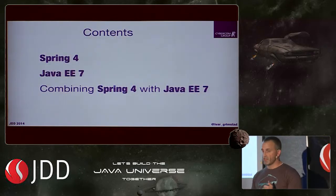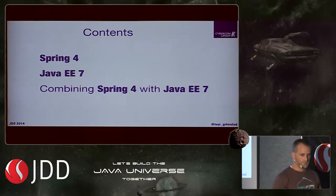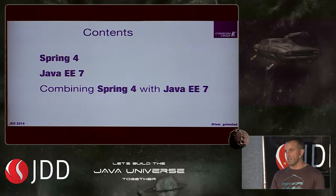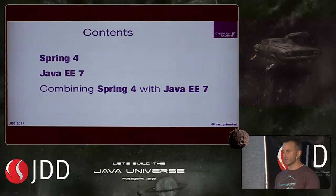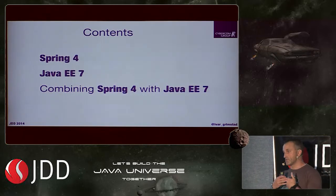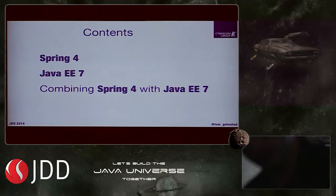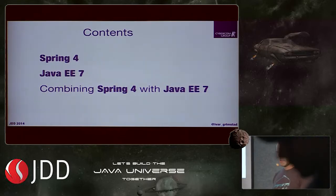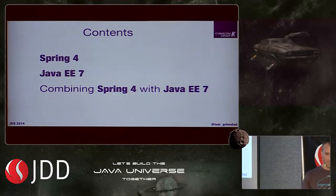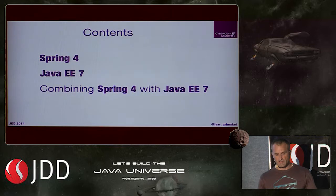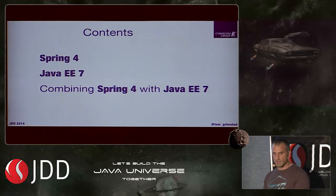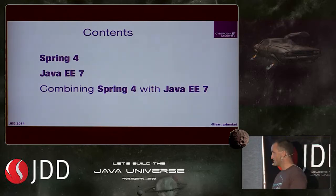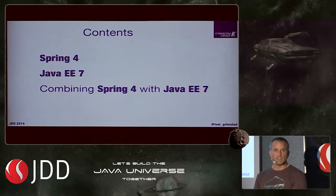What I'm going to talk about today is Spring 4 and Java EE 7, and combining the two frameworks. First I'll give a short intro to what Spring is and some history, then I'll quickly go through what Spring 4 brought to us. Then I'll do the same for Java EE 7. If you've been using both for a long time, there will be code and there will be a demo afterwards.